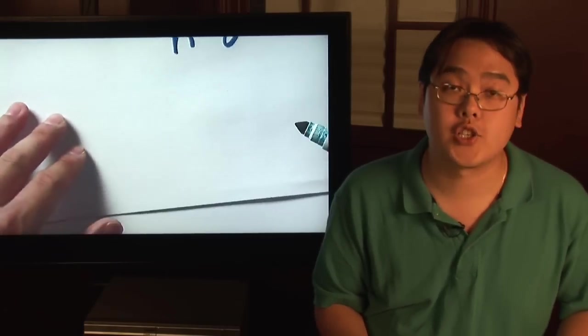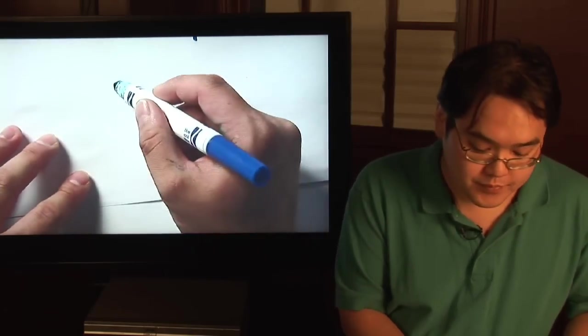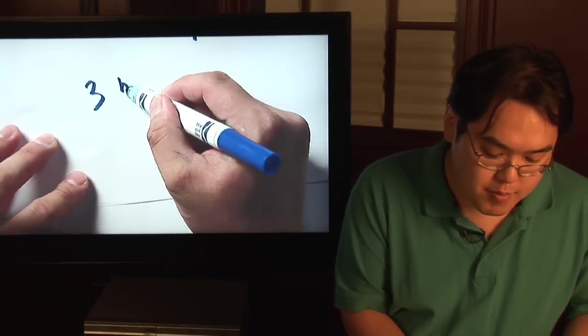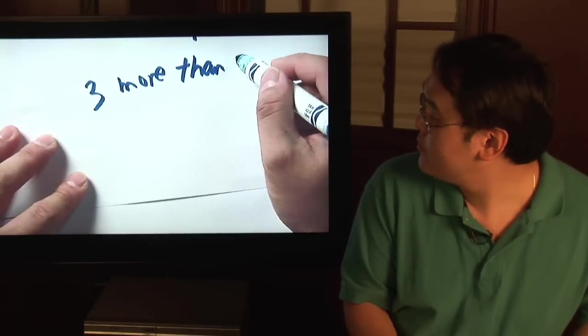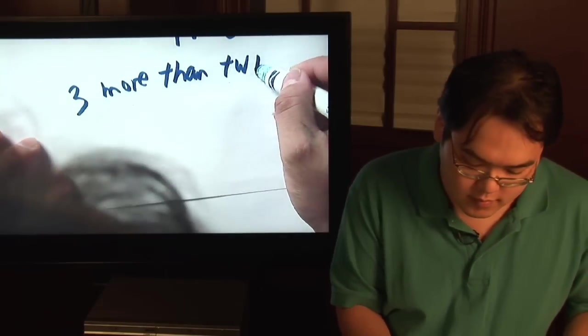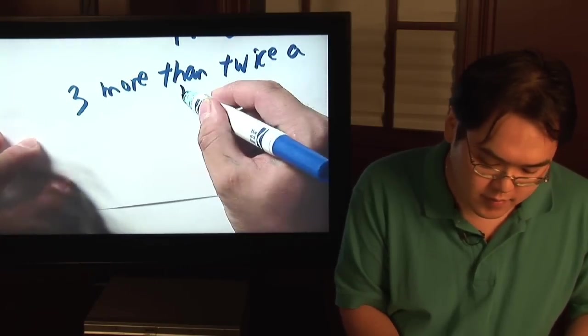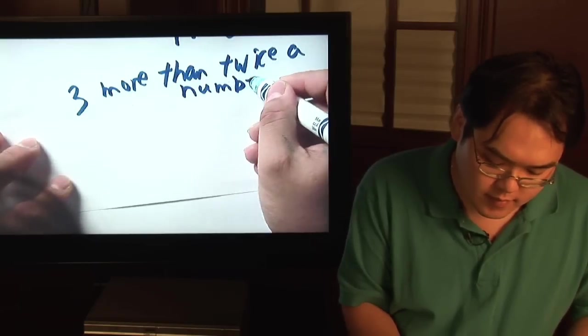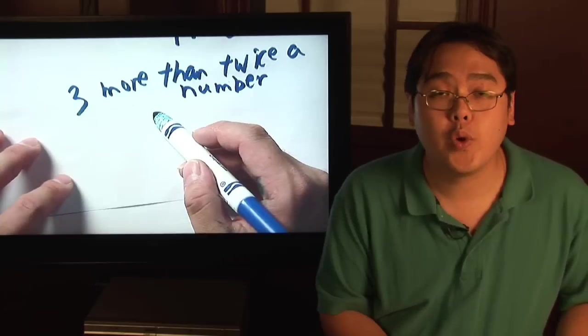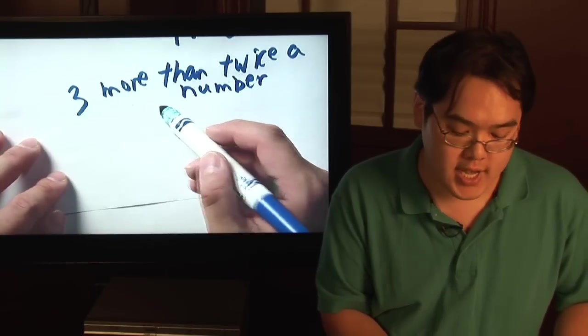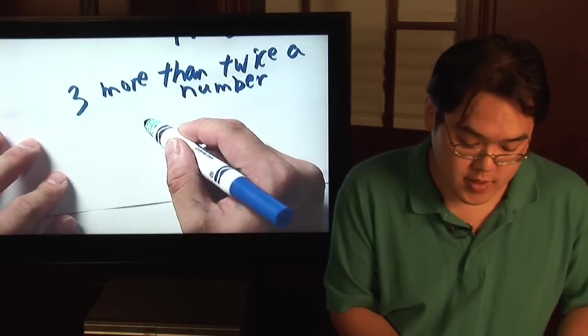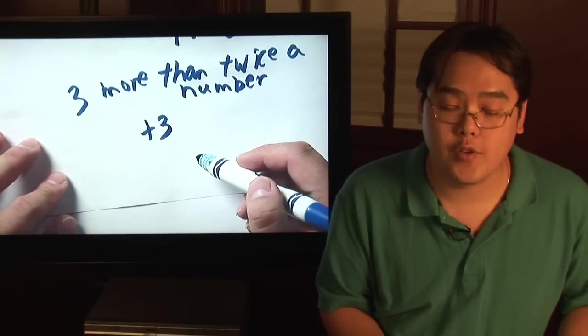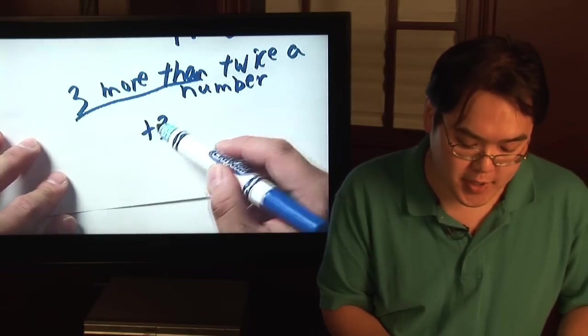Now another illustration would be 3 more than twice a number. Now from above we knew less than meant subtraction. So 3 more than means there's going to be an addition term involved. So 3 more than means plus 3.